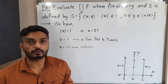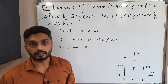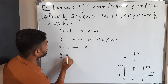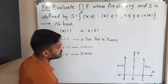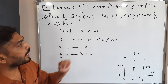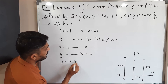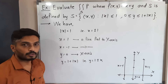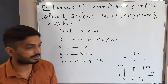Next we have 0 less than or equal to Y less than or equal to 1 plus mod X. Replacing the inequalities with equalities: Y equal to 0 is the equation of the X-axis. And Y equal to 1 plus mod X gives Y equal to 1 plus X and Y equal to 1 minus X, so we consider both cases.